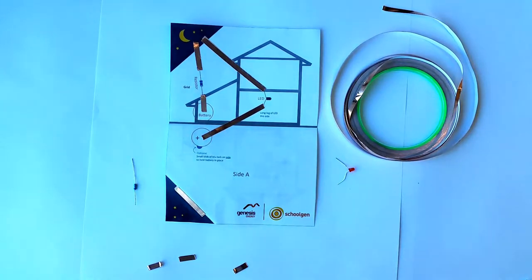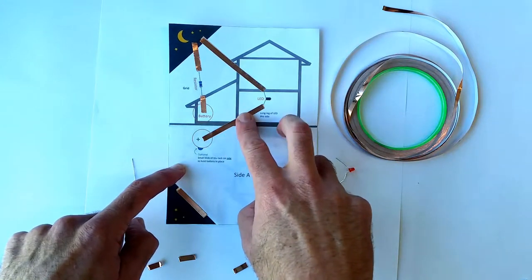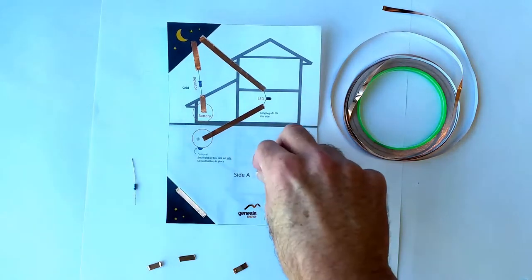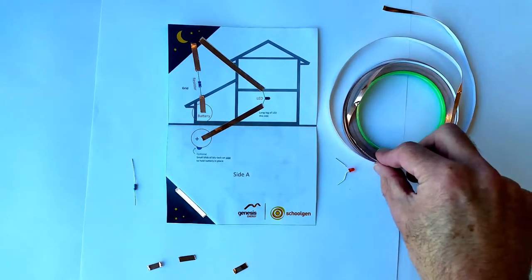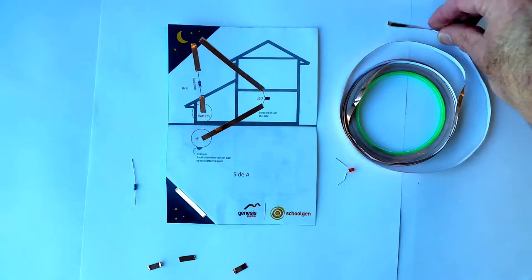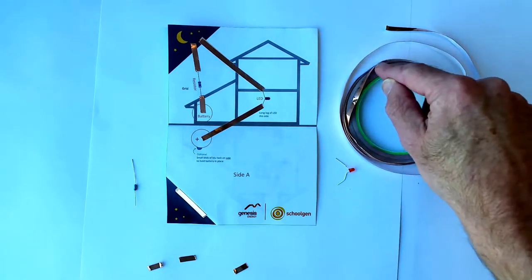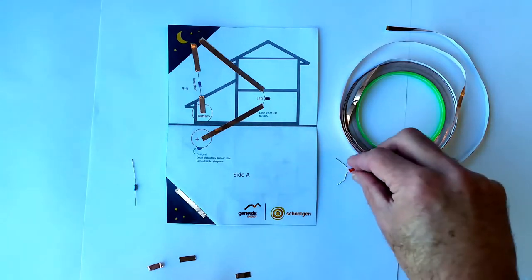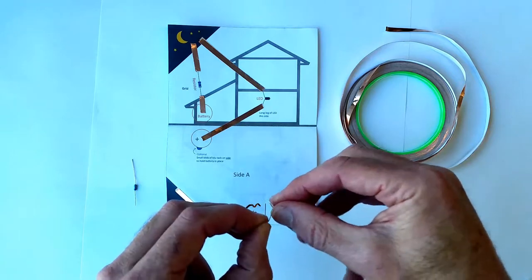Now we've got our five pieces of copper tape with the normal backing stuck on. Next up, we're going to use our special copper tape with a conductive backing on it. It looks normal, but it's different because this one's got the green rim on it, which shows it's got the conductive adhesive. With the LED, the longer leg is positive.